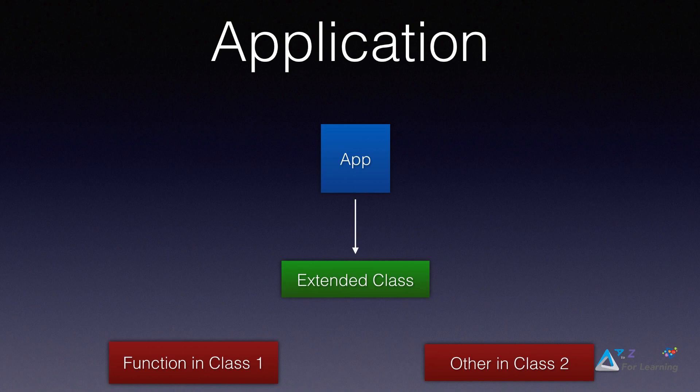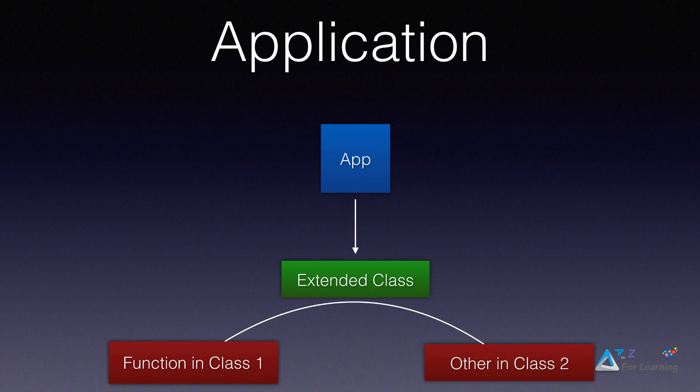In this case I need to do something called Extendation — I create a link between the classes. The class I'm calling in the application is connected to the other class, and the other class is callable from the first class. This makes it easy for you to call the function from the second class, the extended class from class number 1.